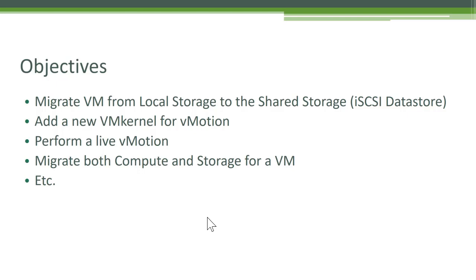Once that is done, we'll go ahead and perform a live vMotion. When I say live vMotion, that means your VM is powered on, it's up and running, and we'll migrate the VM from one ESXi host to another ESXi host. Last but not least, we will also attempt to migrate both the compute and storage for a VM. So let's go ahead and jump directly into the hands-on.